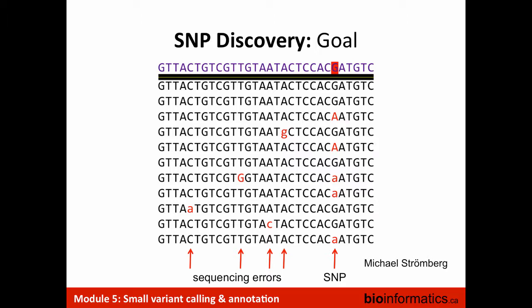Sequencing is 99.9% accurate, which sounds super accurate, but that means 0.1% errors. With so many reads and so many positions, there are actually millions of sequencing errors in your dataset. But those errors should be spread out throughout the reads. We look for positions where multiple reads point to a difference. Every read is mapped individually to the reference genome, and afterwards we look for these differences by collapsing the support.